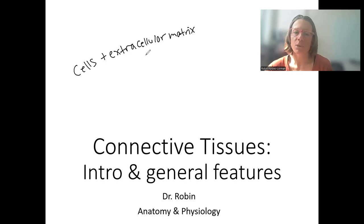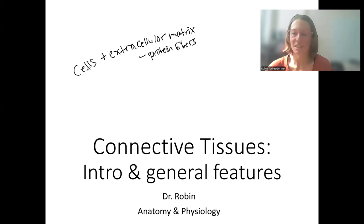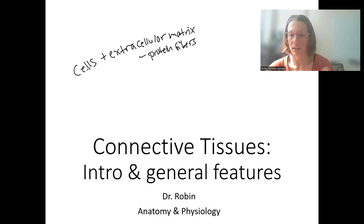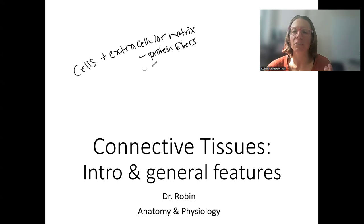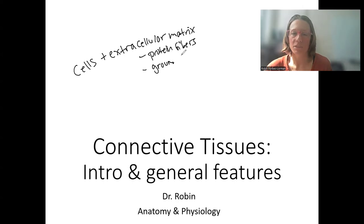Extracellular matrix is composed of protein fibers — proteins that are made by the cells in the tissue. For example, fibroblasts will make collagen fibers, which is a very common example. The matrix also includes a kind of fluid, similar to interstitial fluid, called ground substance.